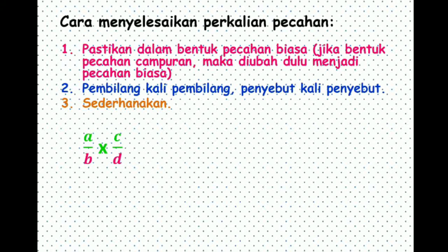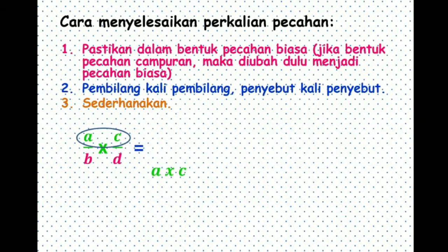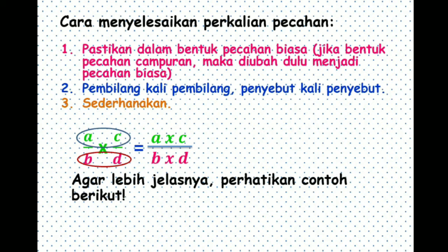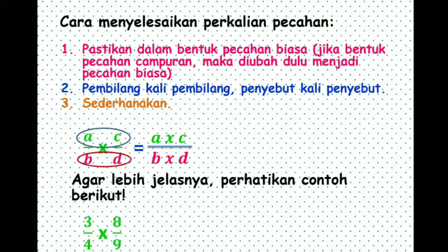Contohnya: pecahan A per B dikali C per D, maka A dikali C (pembilang kali pembilang), kemudian B dikali D (penyebut dikali penyebut). Untuk lebih jelasnya, perhatikan contoh berikut: 3/4 dikali 8/9.